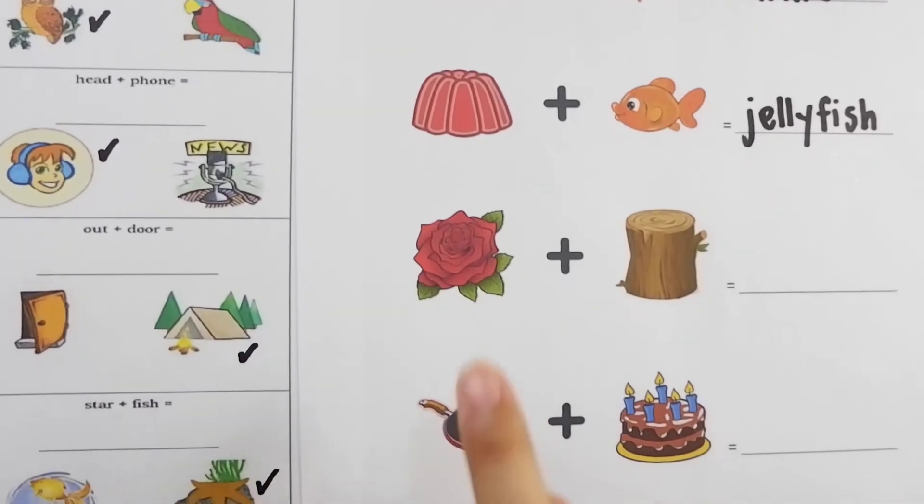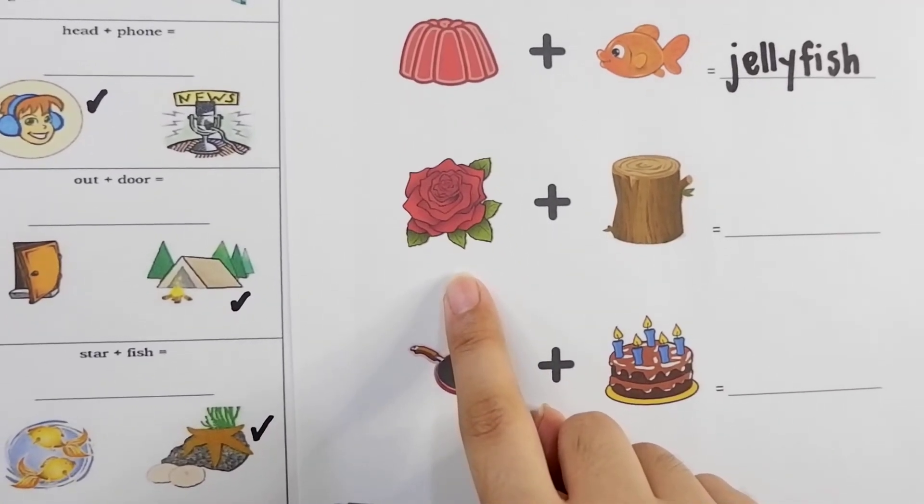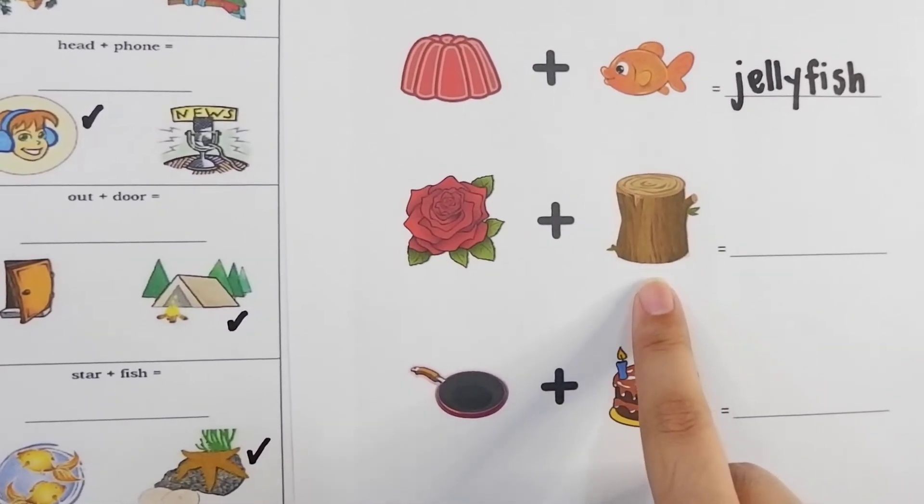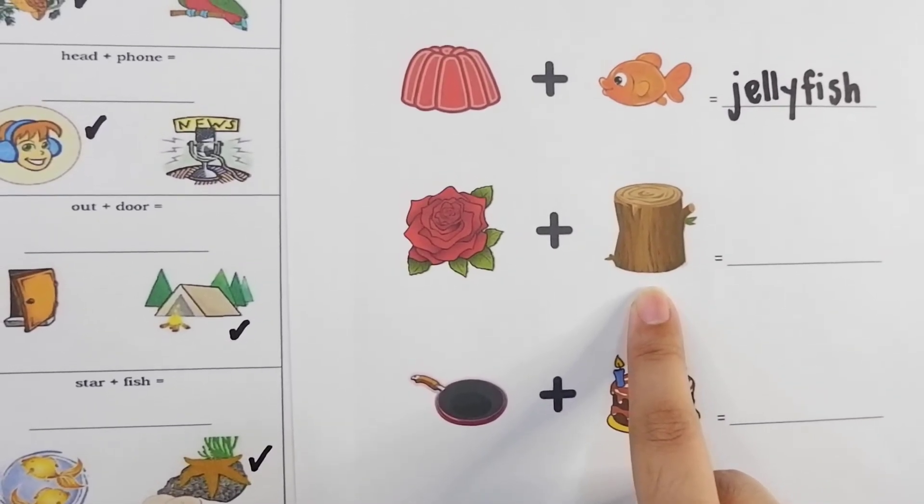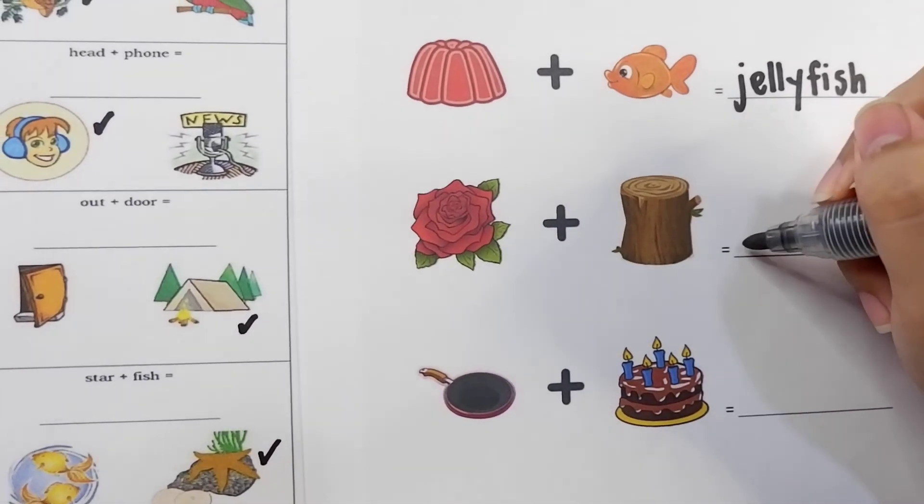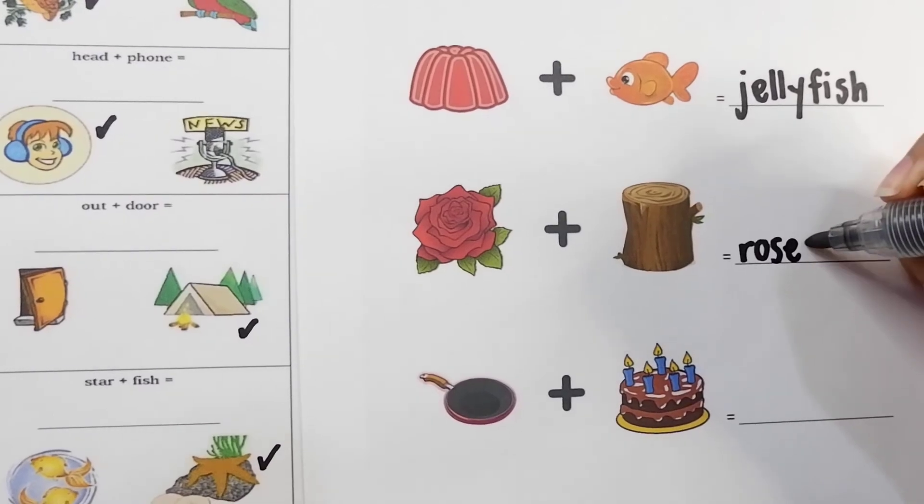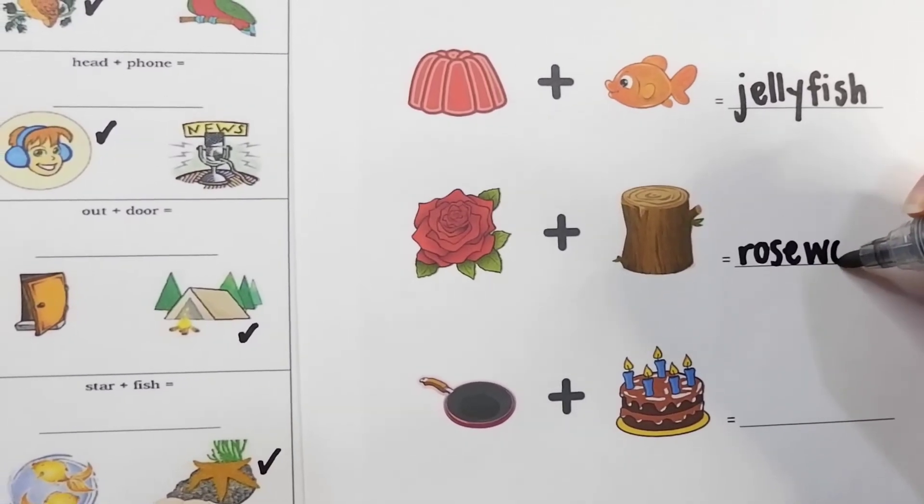What about this one chameleons? Can you try it on your own? This is a rose and this is a piece of wood. Put them together. We get rosewood. Did you get that right? Perfect.